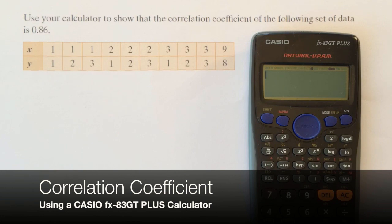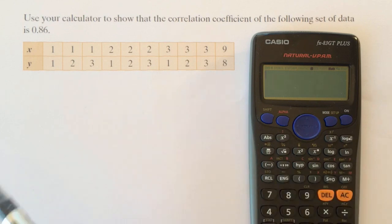In this video we're looking at using the Casio calculator to find the correlation coefficient from a set of data. So I know in this question the correlation coefficient is around 0.86.